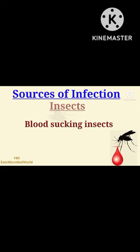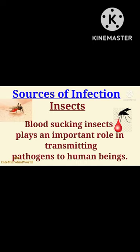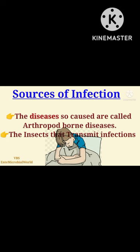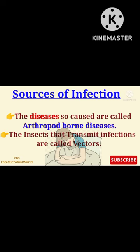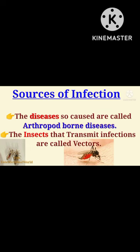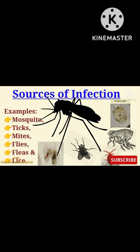Insects. Blood-sucking insects play an important role in transmitting many pathogens to human beings. The diseases so caused are called arthropod-borne diseases, and the insects that transmit infections are called vectors. Examples include mosquitoes, ticks, mites, flies, fleas, and lice.